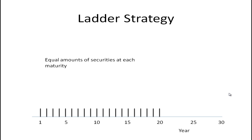The third strategy is a ladder strategy, where you have equal amounts of securities at each maturity. You commonly hear this mentioned by financial planners for individuals who have certificates of deposit. You don't want all of your CDs to mature the same year because rates might be high or low. So you tend to have CDs that mature in different time periods. If you're retired, you may need the money, or if you want to roll it over into another CD, the rates will be different, and next year you'll have another one coming due.